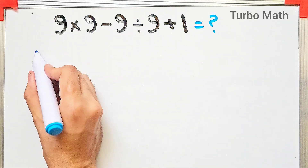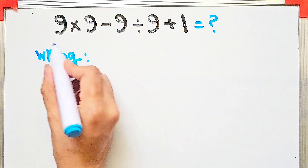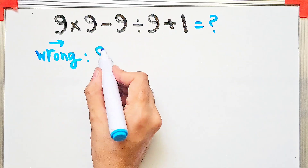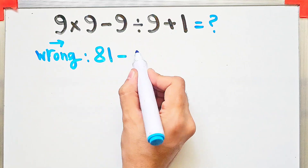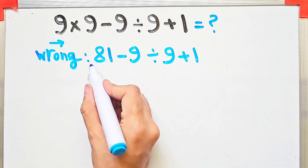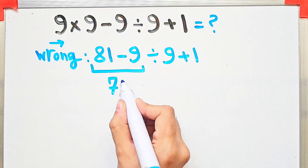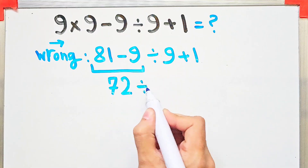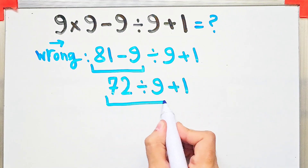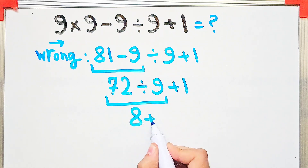A lot of people get this wrong by solving it like this: 9 times 9 equals 81. The new expression is 81 minus 9 divided by 9 then plus 1. Again they start from the left and simplify — 81 minus 9 equals 72. And 72 divided by 9 then plus 1. 72 divided by 9 equals 8.